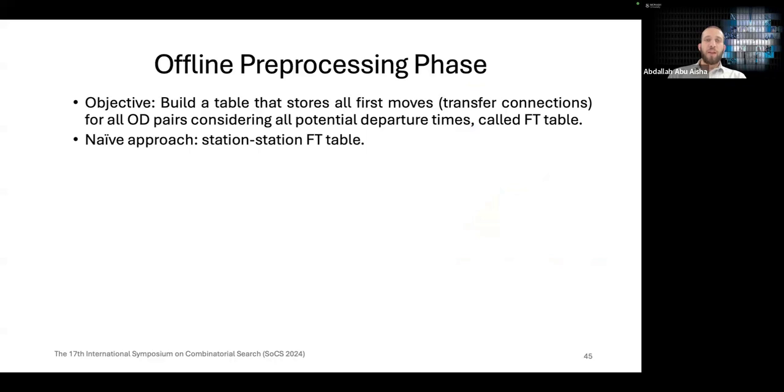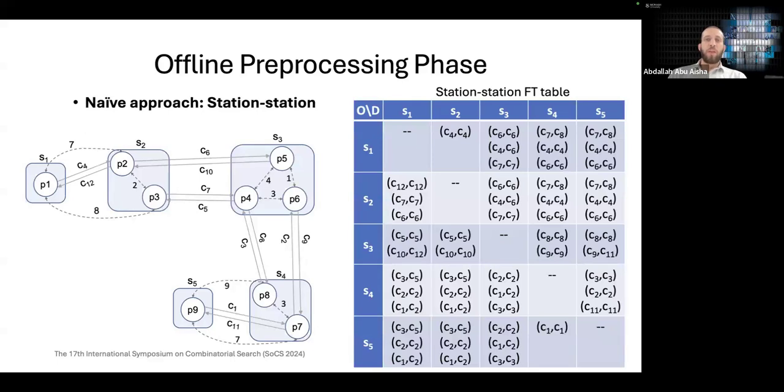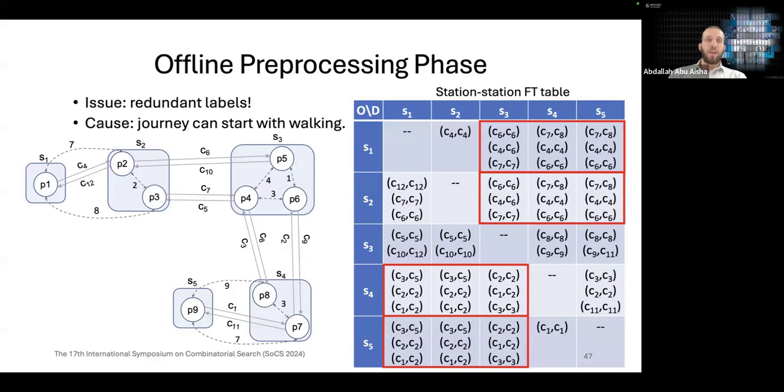The objective of our offline pre-processing phase is to build a table that stores all first moves or transfer connections for all OD pairs considering all potential departure times. This approach has one major limitation, which is the redundant labels. So consider if we want to go from station S1 to station S4. Because we can walk from S1 to S2, this means we can take a departure or a train from S2, although our origin station is S1 and vice versa. So this means the labels from S1 to S3, or S4 would be almost the same as for the labels from S2 to S4. And this can lead to a significant portion of redundant labels.